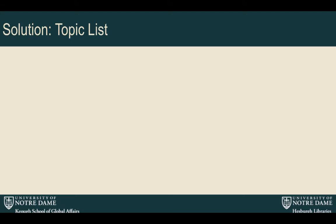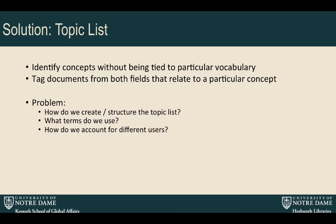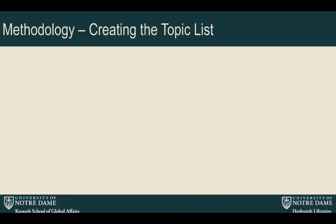So we decided to create a topic list — and every time I present this to a librarian, they say 'you mean controlled vocabulary.' What we wanted to do with our controlled vocabulary was identify concepts without being stuck to particular vocabulary within the text, and tag documents from both fields relating to similar concepts and ideas to bridge the gap between the two fields and make it multidisciplinary. The questions were: how do we create and structure the topic list, what terms do we use, how do we account for different users, and how do we make it broad enough to return results but narrow enough to be useful? The librarians told me there was already language for this — Library of Congress subject headings.